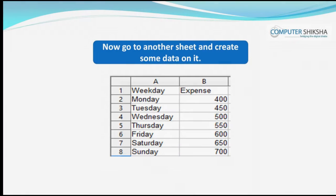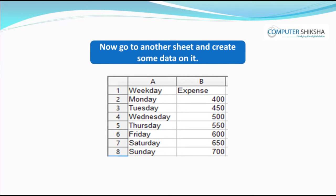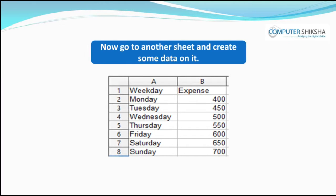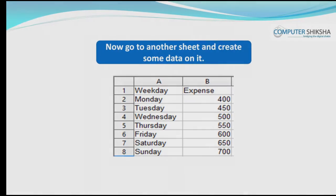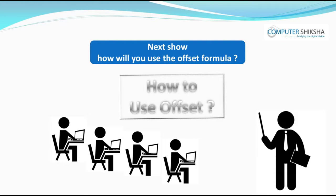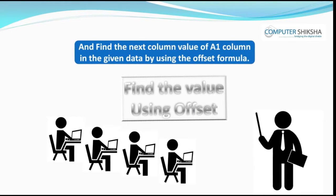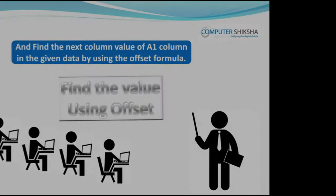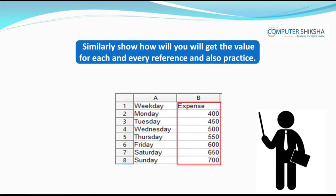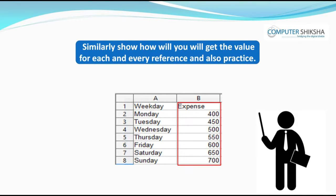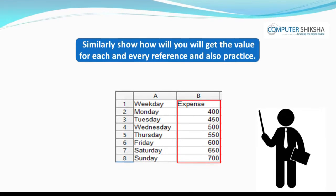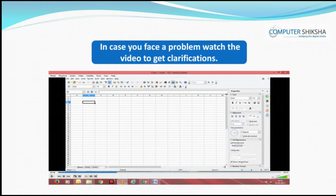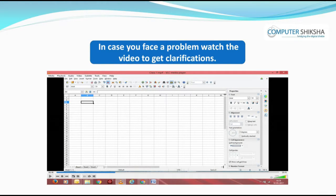Now go to the next sheet and create some data. Note in one cell weekday earnings minus expenses. Show how you will use the offset formula to find the next column value of the A1 column in the given data. Similarly, show how you will get the value for each reference and practice using it. If you face a problem, watch the video for clarification.